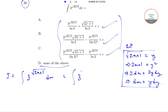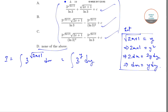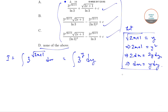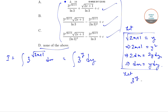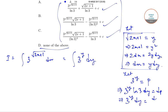Substituting, the integral becomes ∫ 3^y · y dy. Now we use another substitution: let 3^y = p. Differentiating gives 3^y · ln3 · dy = dp, so 3^y dy = dp / ln3. This is our second substitution.